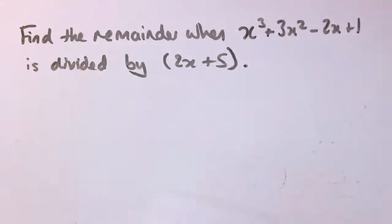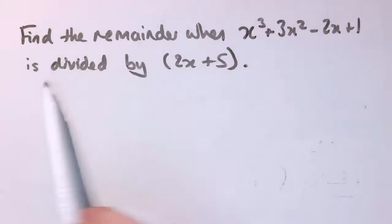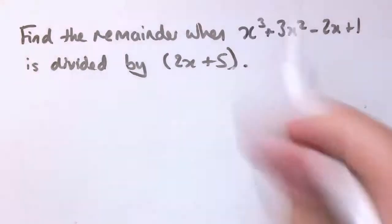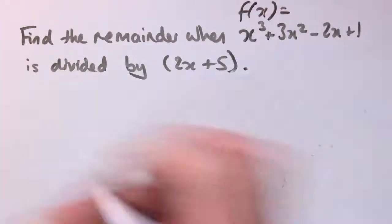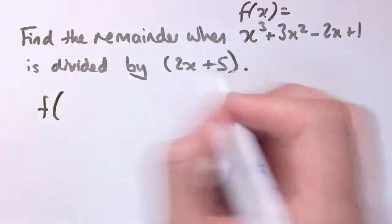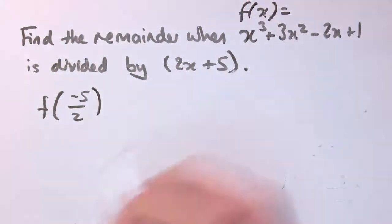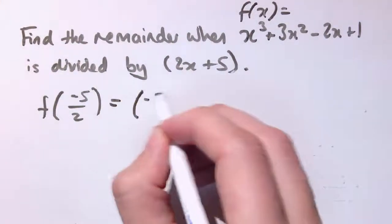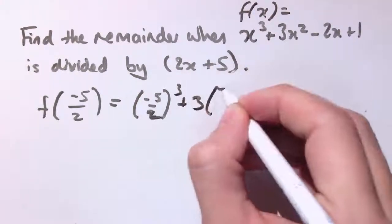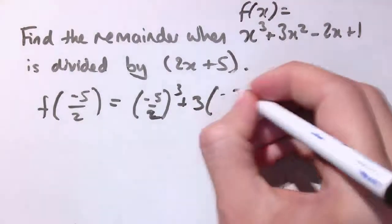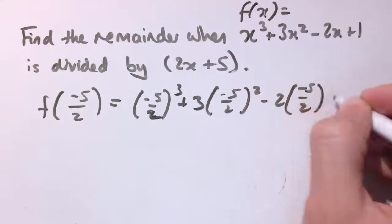For example, if I wanted to find the remainder when x cubed plus 3x squared minus 2x plus 1 is divided by 2x plus 5, well if I call this my f(x), I need to work out f of minus b over a, so I need to work out f of minus 5 over 2. That's minus 5 over 2 cubed plus 3 times minus 5 over 2 squared minus 2 times minus 5 over 2 plus 1.